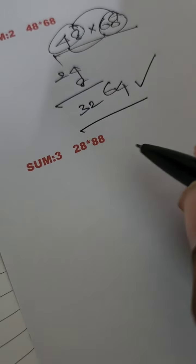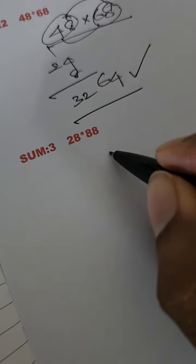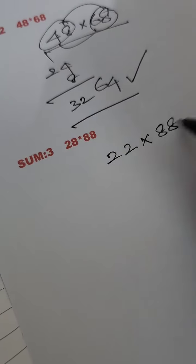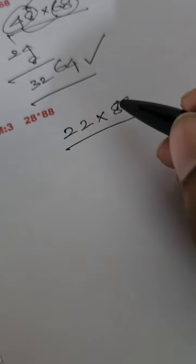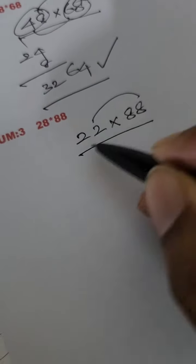We have to follow for 28 × 88. So 28 multiplication 88. Just multiply 8 into 8.